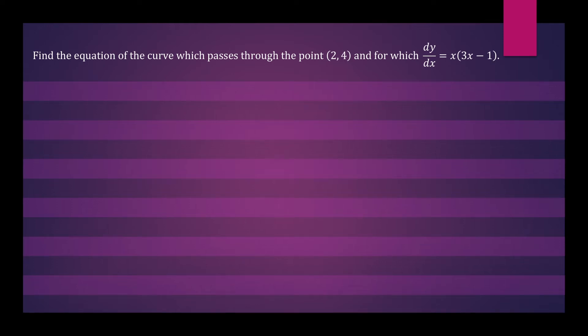Hi everyone, in this question we want to find the equation of the curve which passes through the point (2,4) and for which dy/dx equals x times (3x minus 1). So this given here is your gradient function.